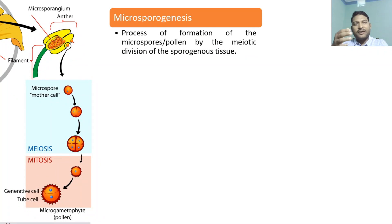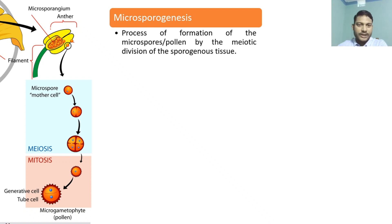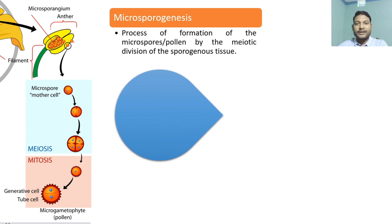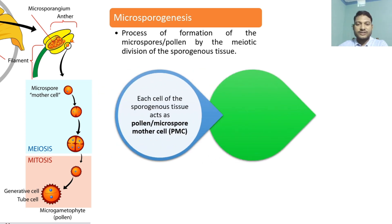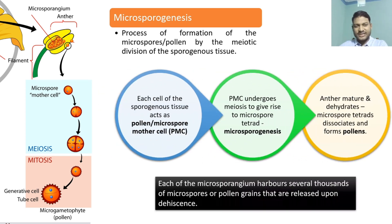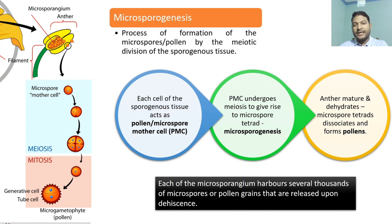The process of formation of the male gamete or the pollen grains — that is, the process of formation of microspores from the sporogenous tissue by meiotic division — is called microsporogenesis. Each cell of the sporogenous tissue can act as a pollen mother cell (PMC) or microspore mother cell. The PMC is diploid in nature and will undergo meiosis.